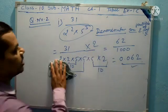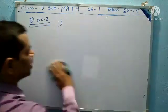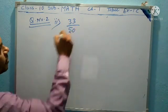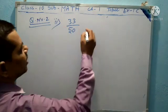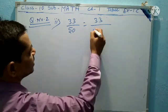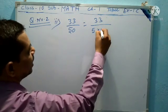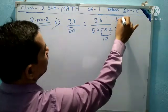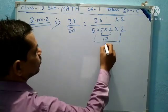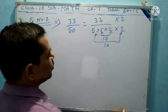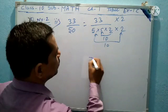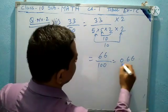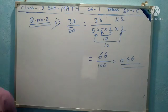Now another question: 33 by 50. Change it into decimal form. 50 is 5 × 5 × 2, so we need one more 2 to make powers of 10. Multiply numerator and denominator by 2: that gives 66 by 100, which is 0.66. So the decimal value is 0.66.